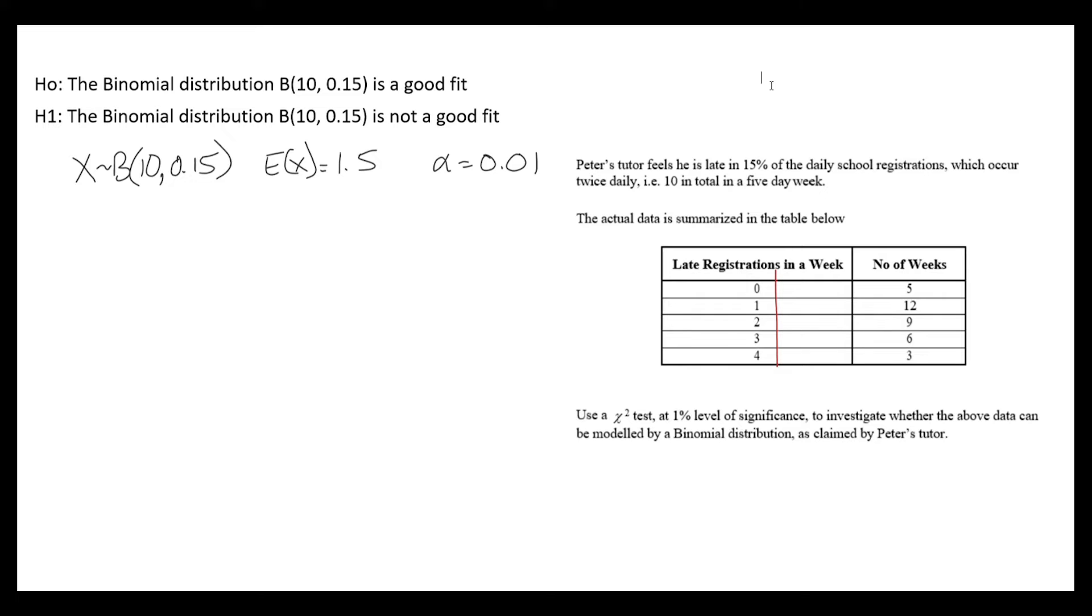So each probability that we find, we then need to multiply it by 35. So the probability there are 0 lates in a week, multiplied by 35, gets us an expectation of 6.891. The probability that there's 1 late in the week, multiplied by 35, that gets us 12.16, and so on. Here we have all of our expected values.